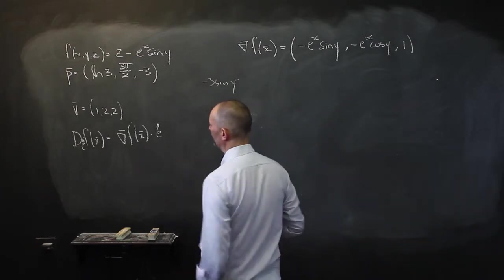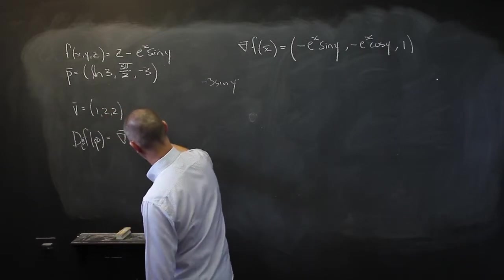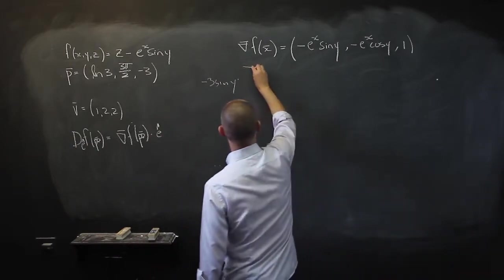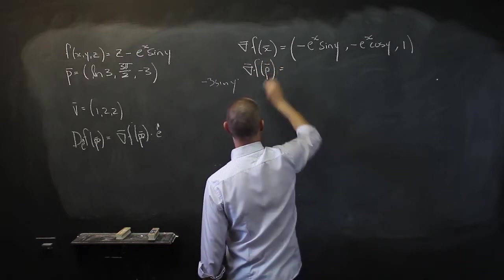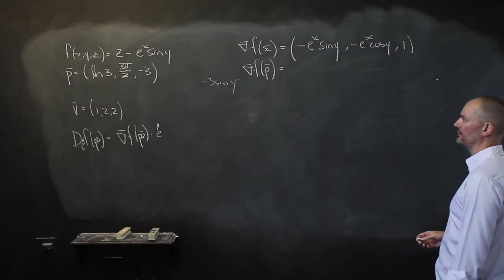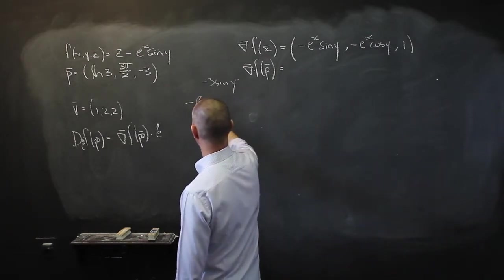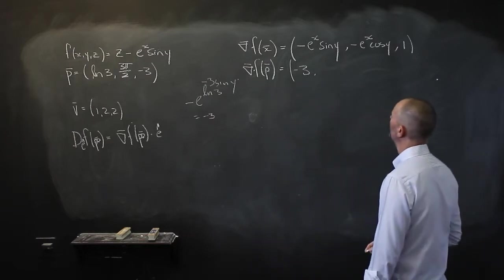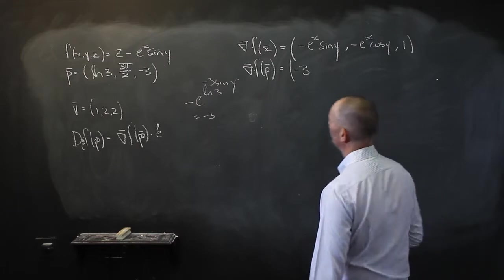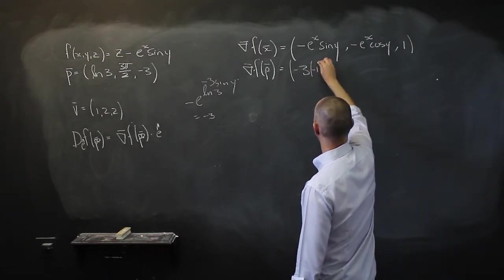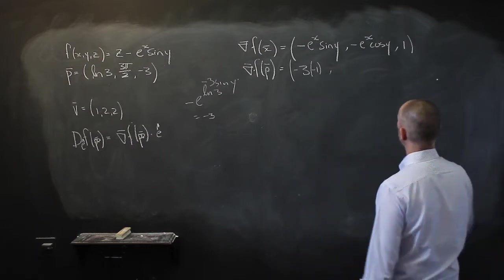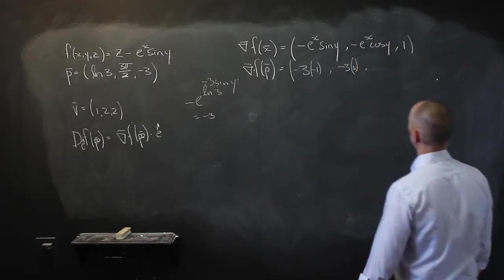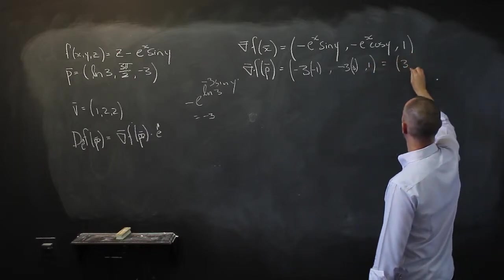Now I need the gradient at this specific point P. Substituting in: negative e to the power ln(3) — you need to know that becomes just negative 3 — times sine of 3π/2, which is negative 1. So that gives 3. The cosine of 3π/2 is 0. And 1 remains. So the gradient at P is (3, 0, 1).